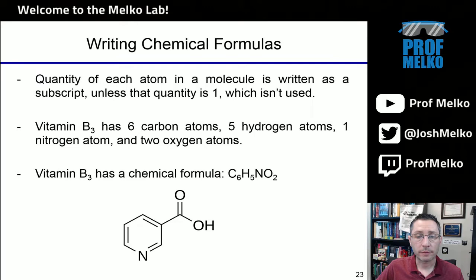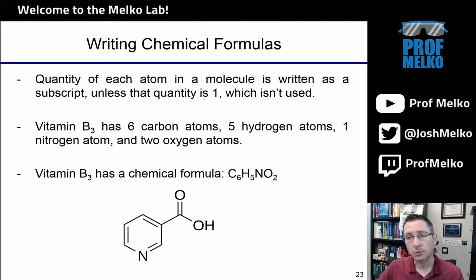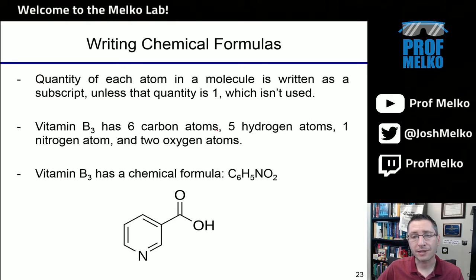Sometimes chemical formulas aren't enough — you want to visualize something like a structure. The chemical formula defines what element and how many of those atoms there are. We write these as subscripts, just below. So for hydrogen, there's two of them; oxygen, there's one of them. That's the chemical formula for water. Since oxygen is only one atom, we don't write the one — if you don't see a number, it's implied that it's one.